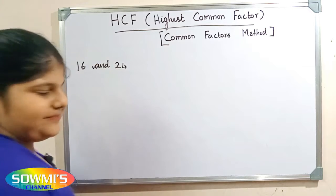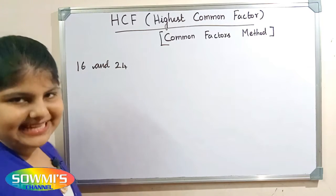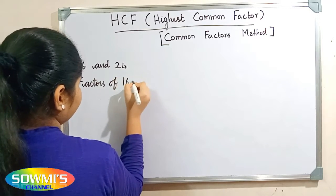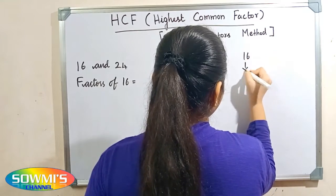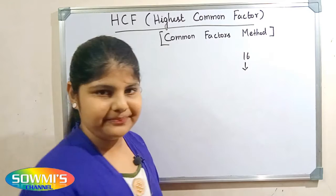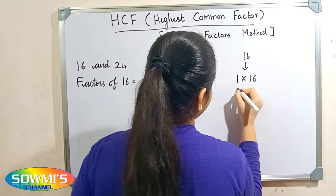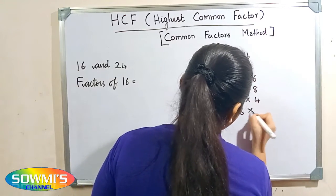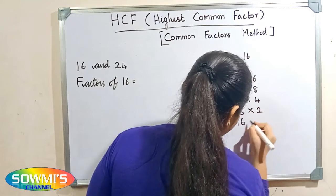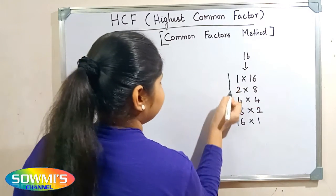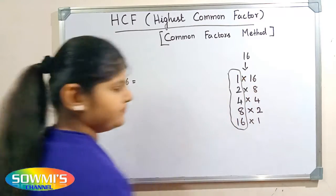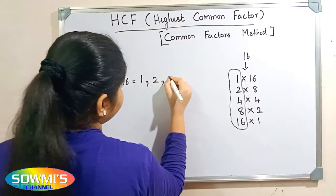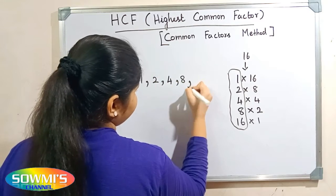First I will take 16, so now we have to find the factors of 16. We have to find in which table 16 comes: 1 × 16 = 16, 2 × 8 = 16, 4 × 4 = 16, 8 × 2 = 16, 16 × 1 = 16. These are the factors of 16. So the factors of 16 are 1, 2, 4, 8, and 16 itself.